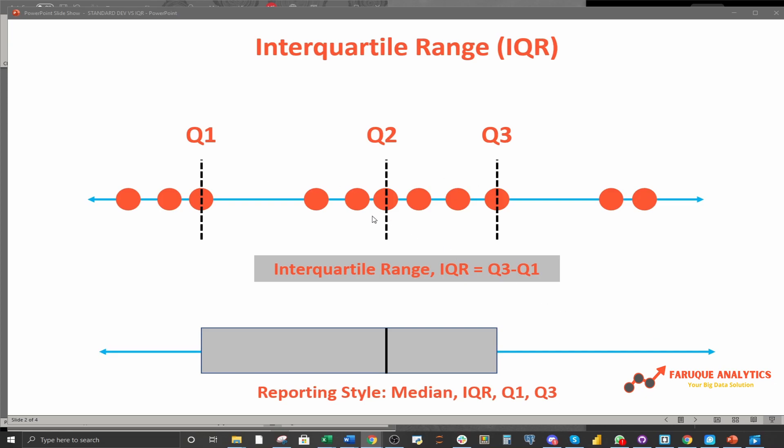This can also be represented using a box plot or box and whisker plot. This line represents the median and the edges of the box represent the Q1 and Q3. And then the whiskers are the outliers. And from a technical point of view, this box actually incorporates or includes 50% of your data and the rest of the 50%, 25% on this side, and 25% is on this side. And we usually report median, IQR, Q1, Q2, and Q3.